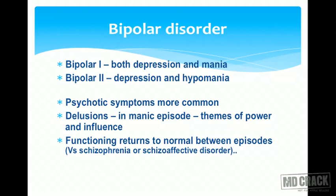Moving on to bipolar disorder: as the name suggests, there are two poles — mania and depression. Bipolar Type I has both depression and mania, while Bipolar Type II has depression and hypomania. Psychotic symptoms are more common in bipolar disorder, and during manic episodes patients typically develop delusions with themes of power and influence. Crucially, functioning returns to absolutely normal between episodes, which differentiates bipolar disorder from schizophrenia or schizoaffective disorder.